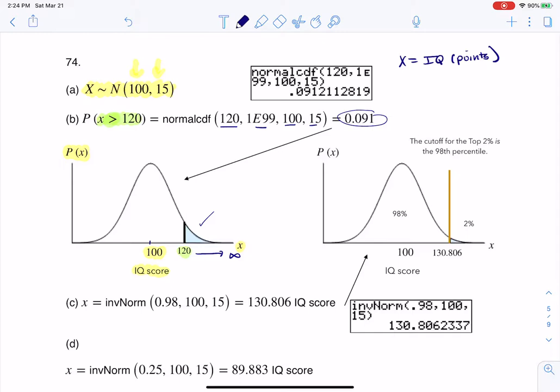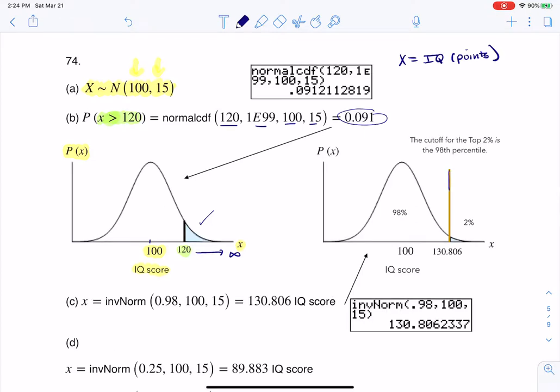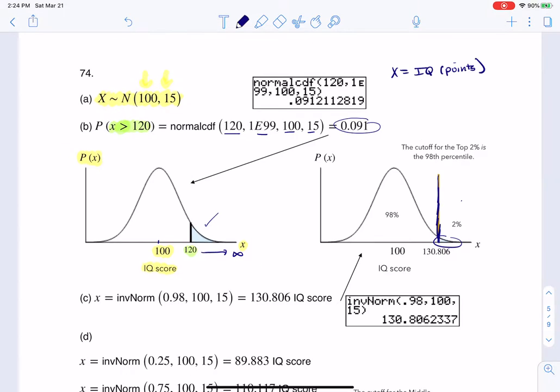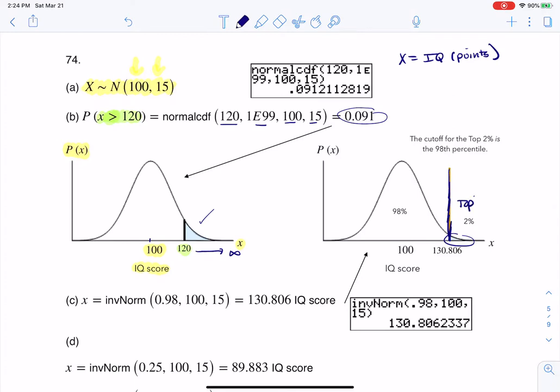So part C is saying, what's the IQ to qualify for Mensa? And Mensa is in the top 2%, so you can imagine I want to find now the top 2%. And the top 2%, that's great. We want that area under a curve, but your calculator is not built in tops. It's built in percentiles. So if you want the top 2%, that's the same cutoff as the bottom 98%, right? Because we're using the complement rule. So if I want to find this top 2%, I can't plug in 0.02 to my calculator using inverse norm, because that would actually give me the second percentile, and I want the 98th percentile.